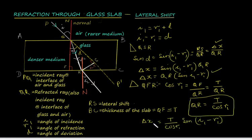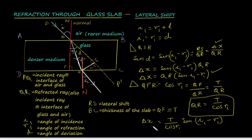Substituting the value of QR into the equation, delta-x equals t divided by cos(r1) times sin(i1 minus r1). So if we know the thickness of the glass slab, the angle of refraction, and the angle of incidence, the lateral shift can be calculated from this formula. It is clear that greater the thickness, greater will be the lateral shift.